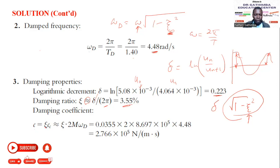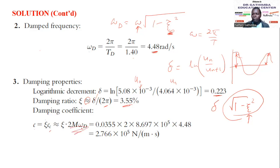Finally, for the damping coefficient c, we use the relation c = ξ × c_critical. The expression for c_critical can be obtained from the equation of motion derivation covered in previous lectures. We plug in the known parameters — including ξ and c_critical — to get the damping coefficient c.